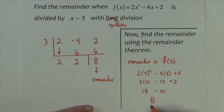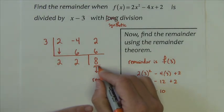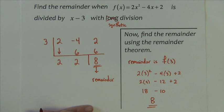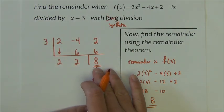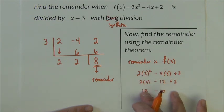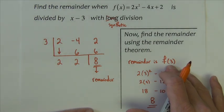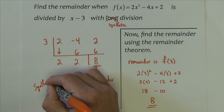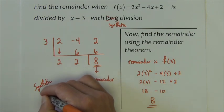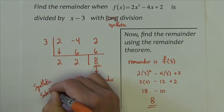And lo and behold, these numbers are in fact the same. So this synthetic division to find the remainder is the exact same as evaluating the function at a number. This has actually got a name. This is called synthetic substitution.